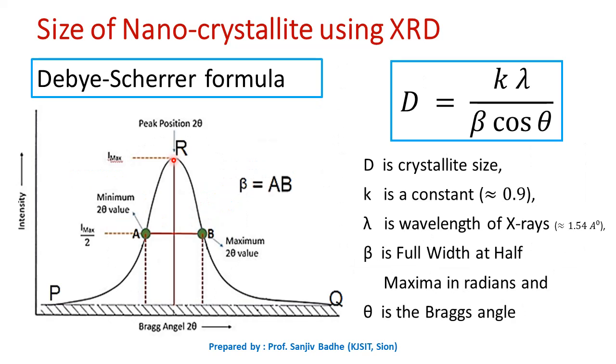The highest intensity point in this peak can be used to find out the value of theta, the Bragg angle, which is required in this Debye-Scherrer's formula. And beta, the full width at half maximum,